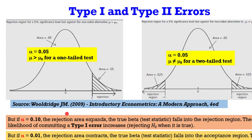How about a type 2 error? If alpha is reduced to 1%, the rejection area contracts, the true beta now falls into the acceptance region, thereby increasing the likelihood of committing a type 2 error. So the more you reduce alpha, the likelihood of committing a type 2 error increases.